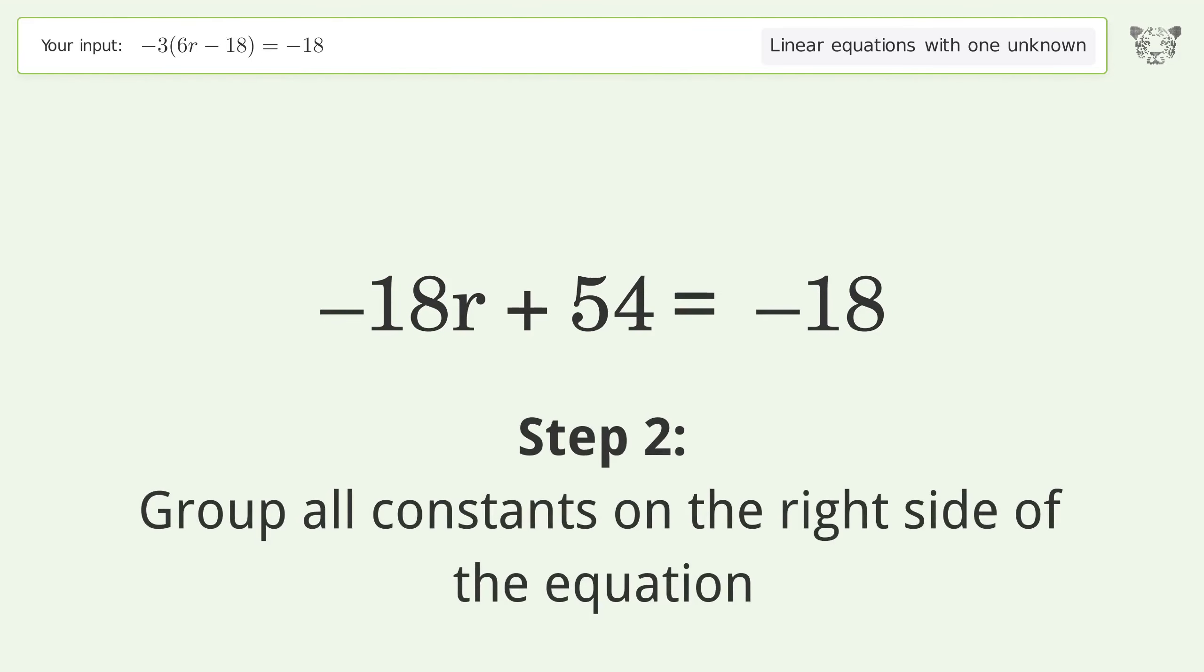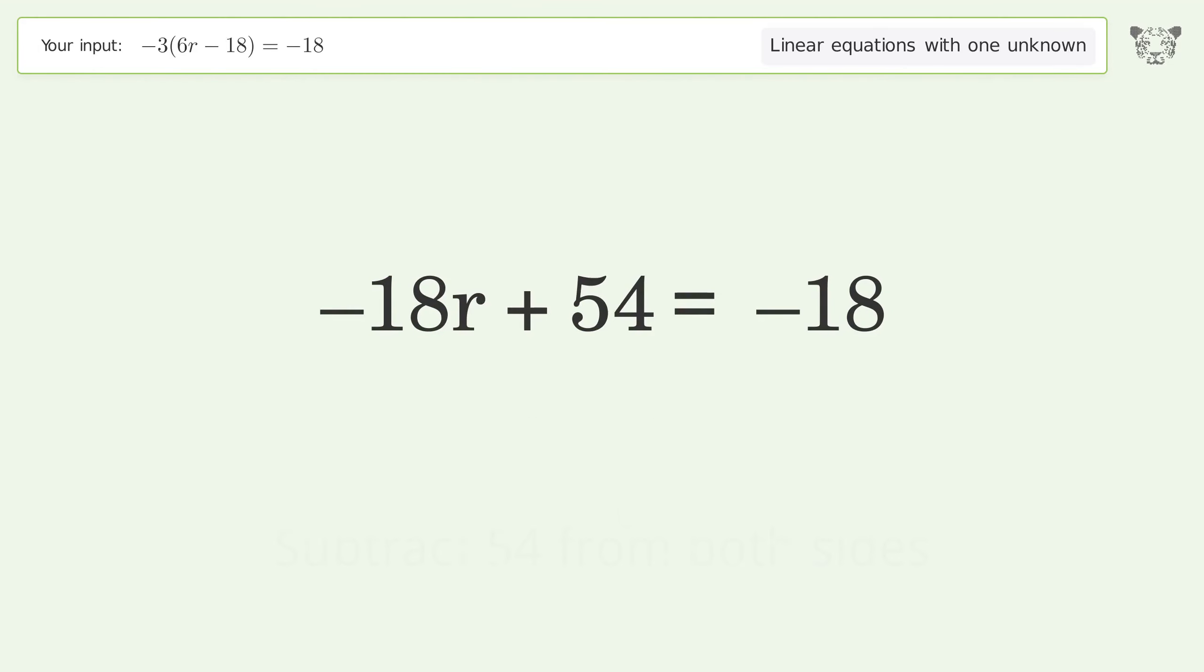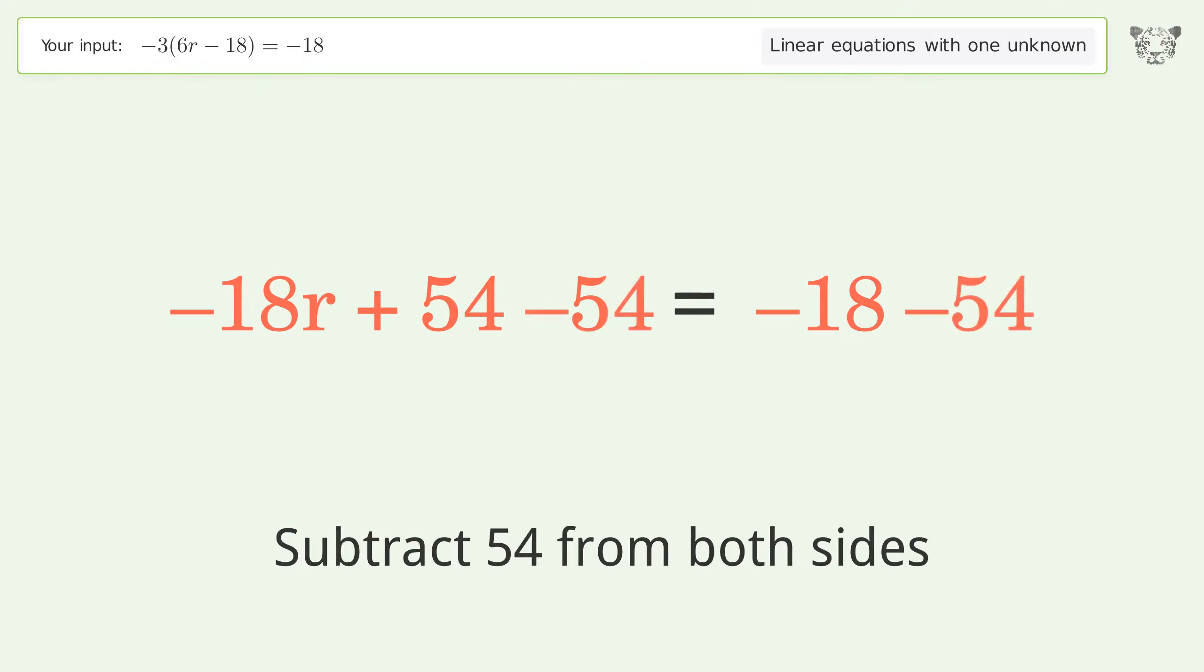Group all constants on the right side of the equation. Subtract 54 from both sides. Simplify the arithmetic.